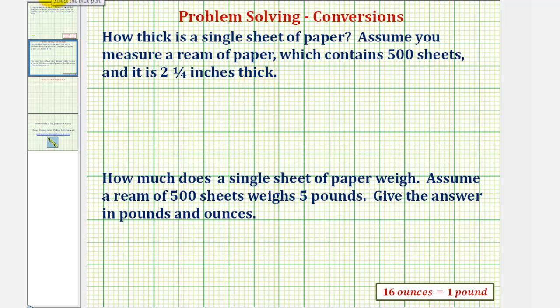Let's begin by setting up a rate that compares the thickness to the number of sheets. Since we know five hundred sheets has a thickness of two and one-fourth inches or two point two five inches, we'll set this up as two point two five inches per five hundred sheets.